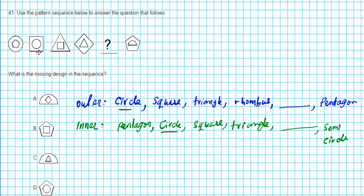In the outer, we have circle, square, triangle, rhombus, circle, square, triangle. Guess what comes next? After the triangle on the outer was rhombus, so in the inner we're following exactly the same pattern. So we will have a rhombus as the inner shape for the missing figure.